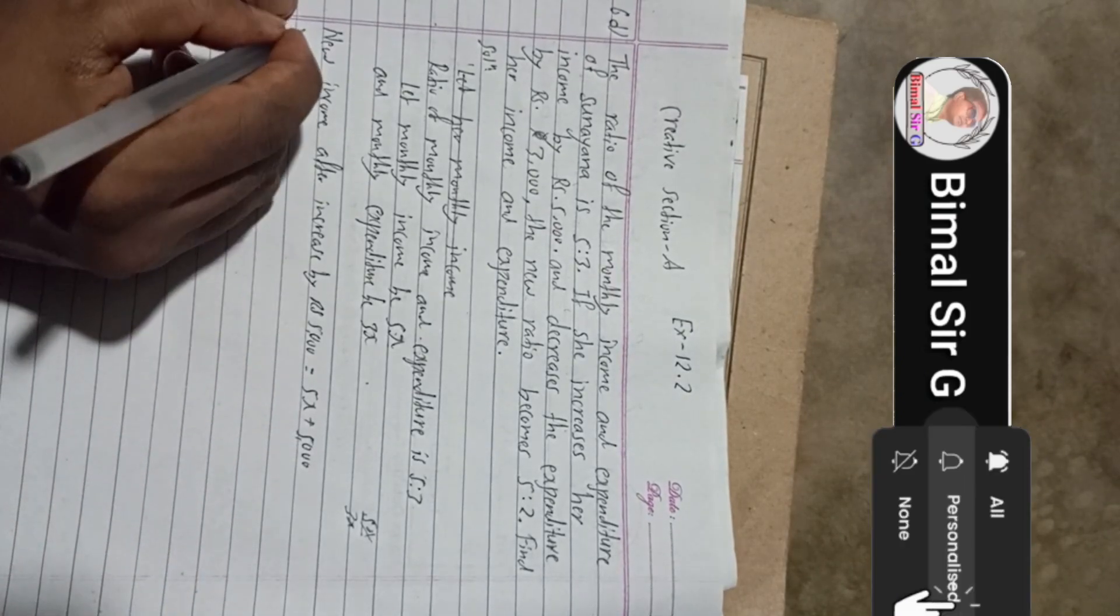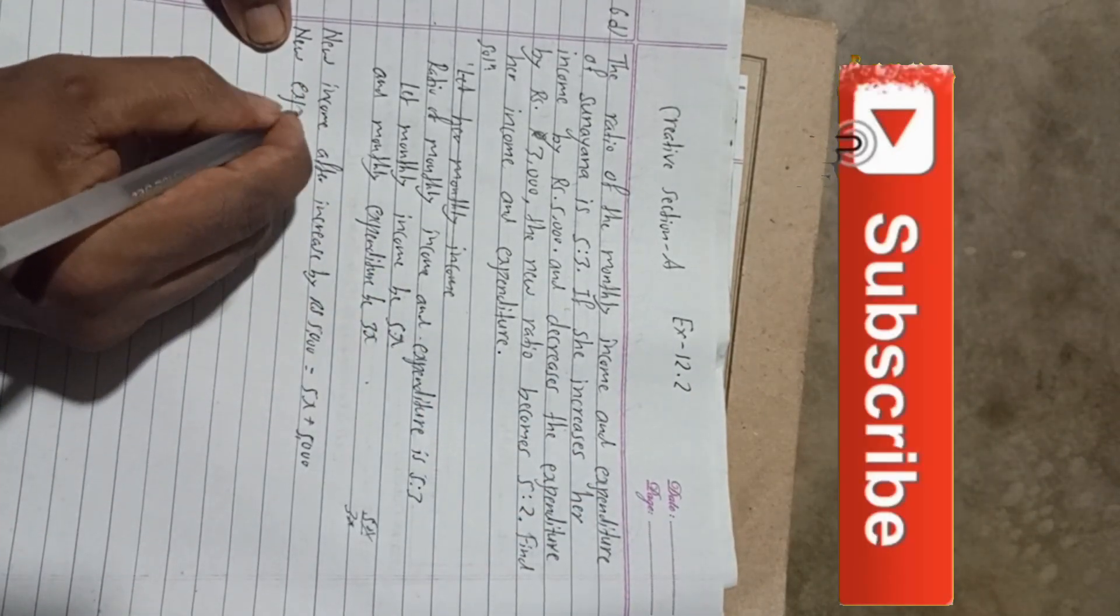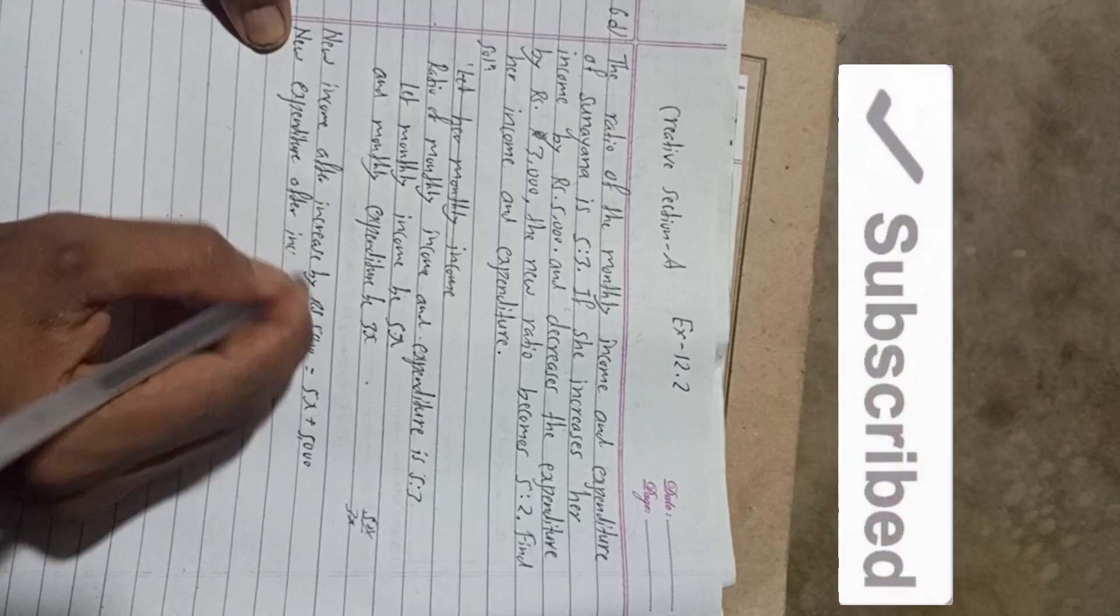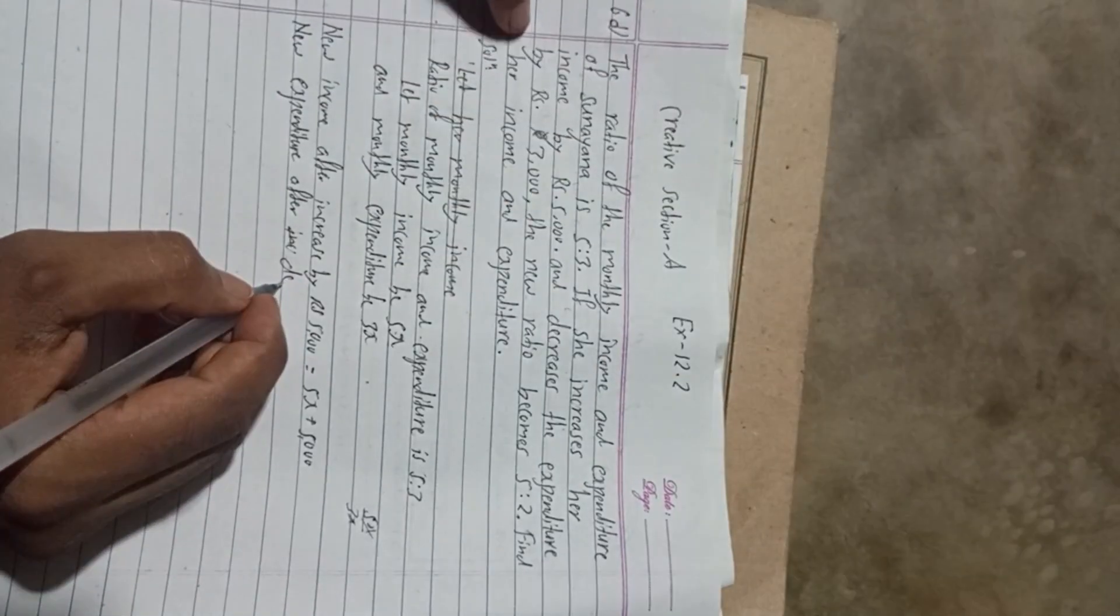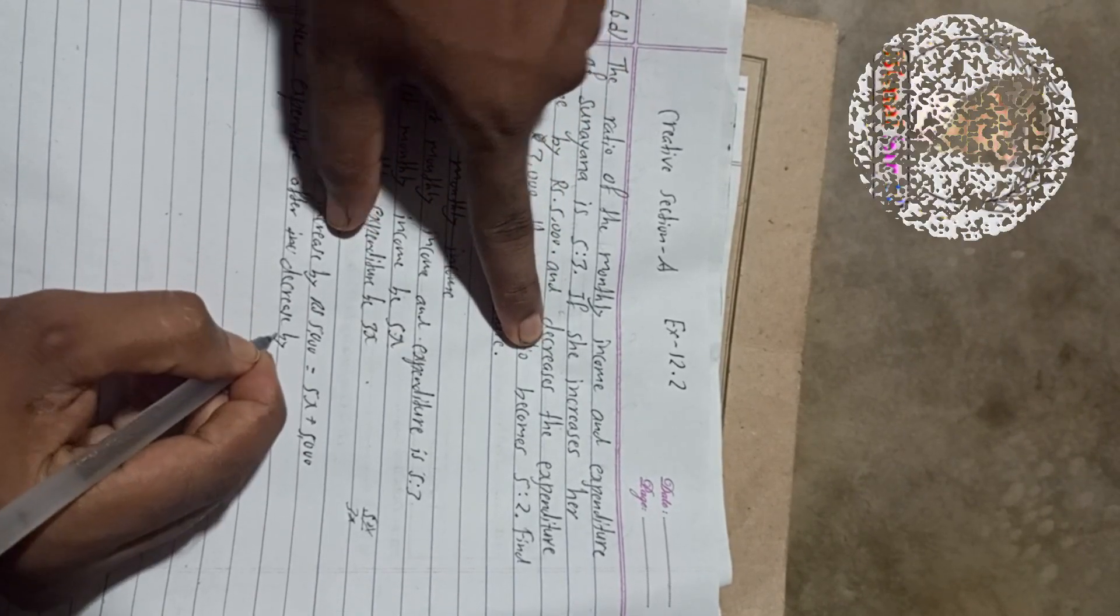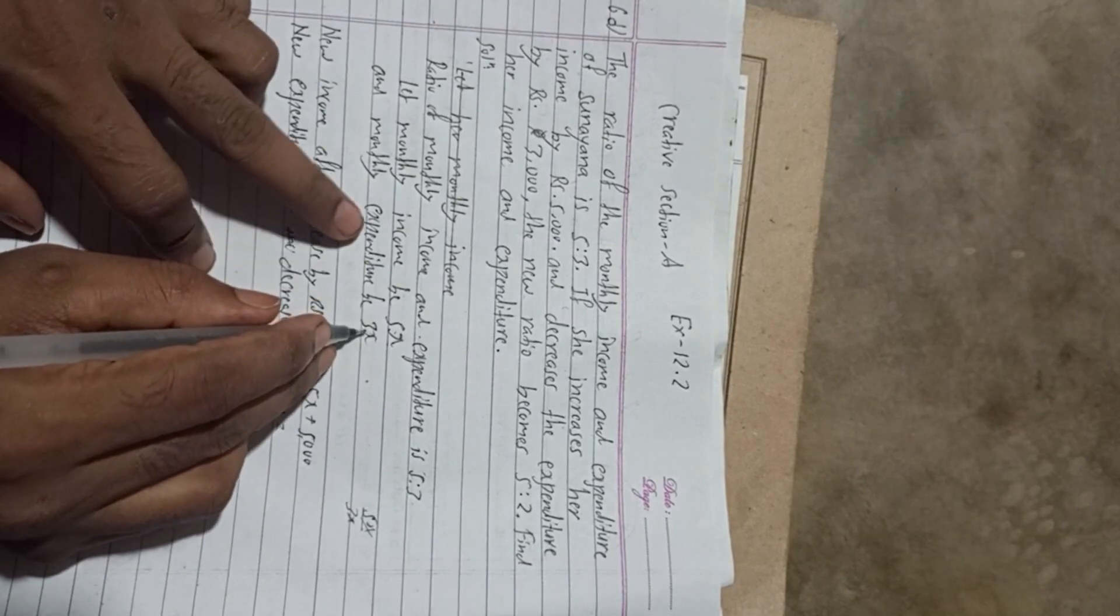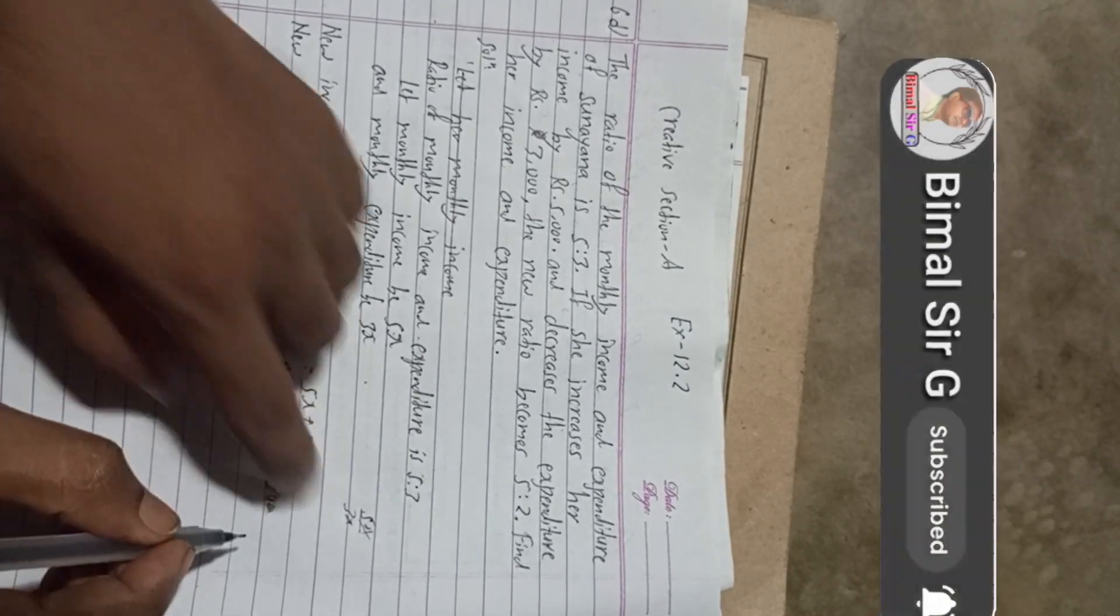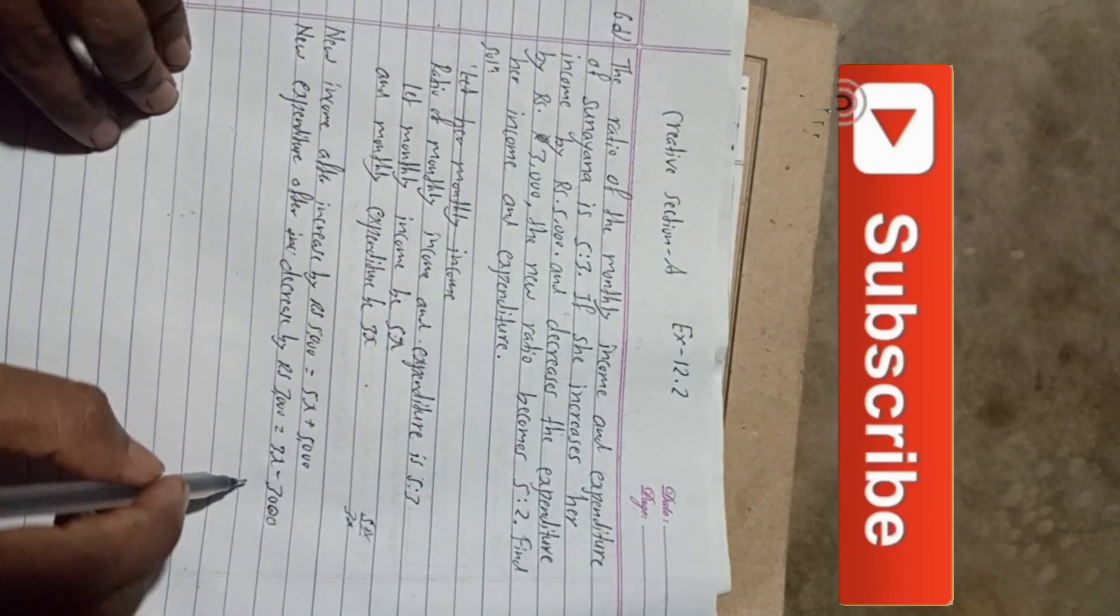So income after increase by 5,000 will be how much? First it was 5Y. So this 5Y and plus, this is increase, so this is plus 5,000. This is the condition. Now, again, new income. Now we will find expenditure. Expenditure after decrease. So decrease after decrease by Rs 3,000. So this will be, expenditure was 3Y. So when it decrease by 3,000, it will be minus 3,000.